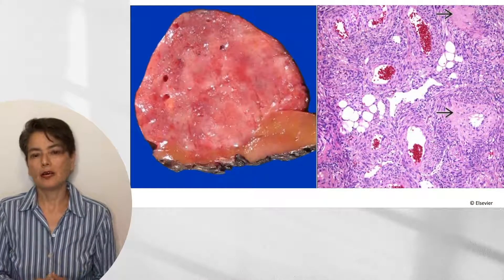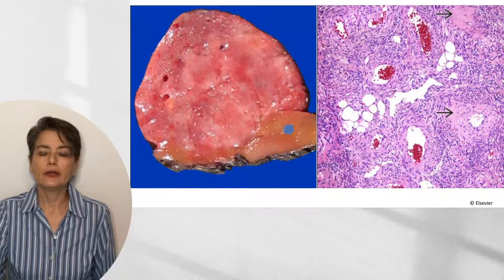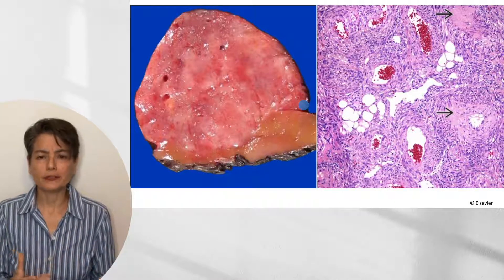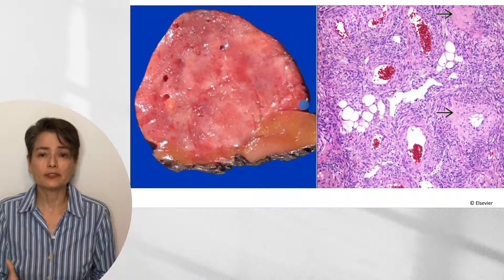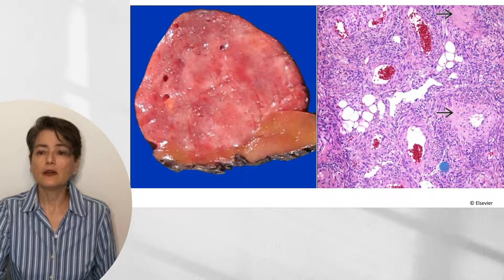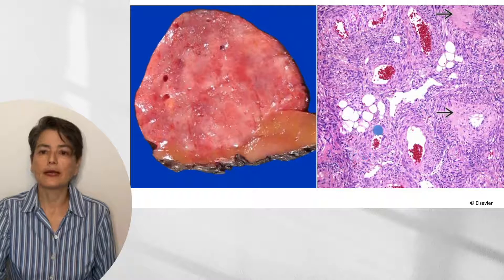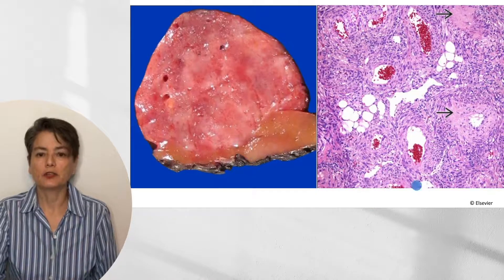Here is the gross appearance of an angiomyolipoma. You can see the renal cortex, and the tumor has a heterogeneous appearance because it is made of a heterogeneous variety of cell populations. Histologically, you can see poorly formed thick-walled blood vessels, scattered islands of fat, and abundant spindled cells resembling smooth muscle cells. This histologic heterogeneity explains the heterogeneous gross appearance.